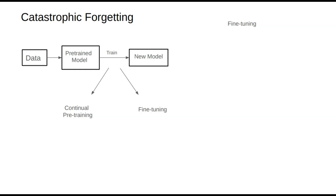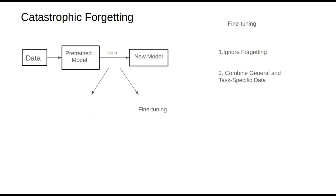Although many techniques also apply to continual pre-training, the first approach is to simply ignore forgetting. In some cases, such as sentiment classification, if the goal is to create a model solely focused on sentiment analysis, we don't necessarily need to worry about other abilities diminishing. Here, we can largely ignore catastrophic forgetting.